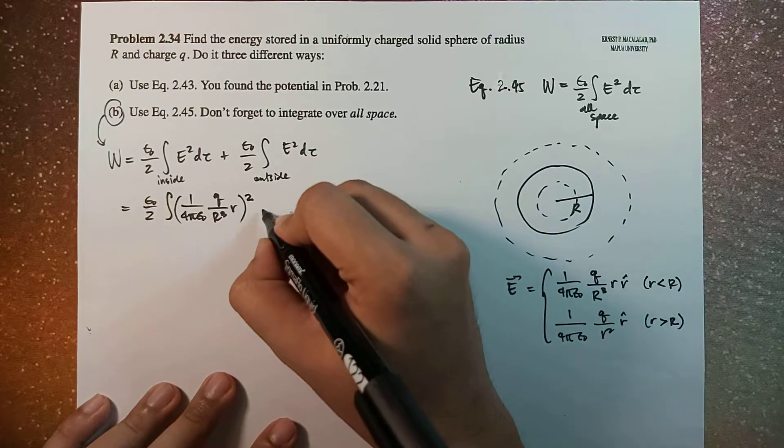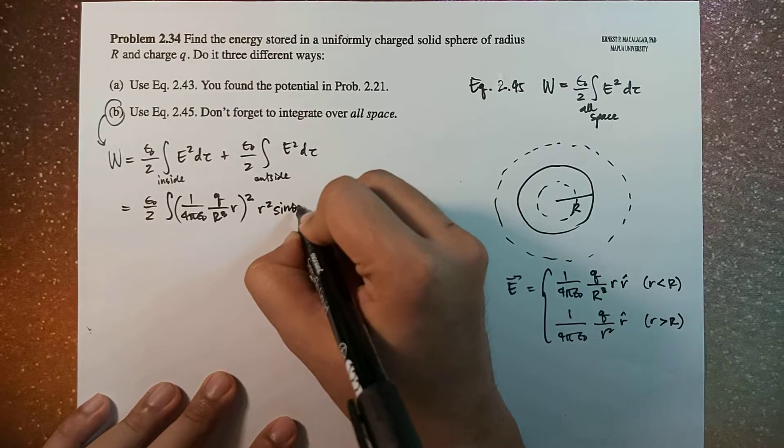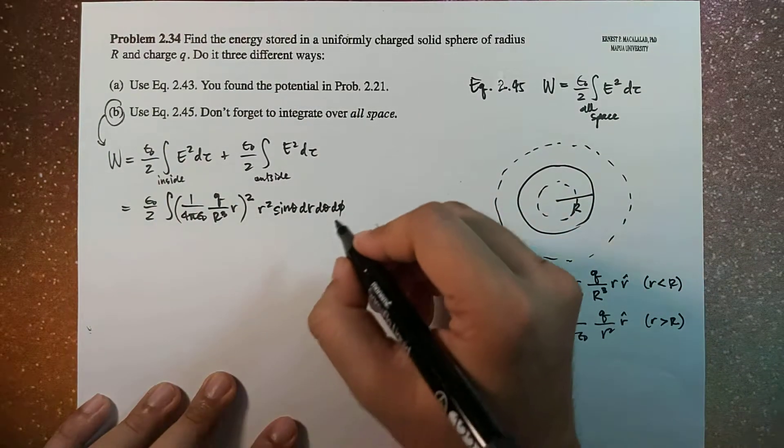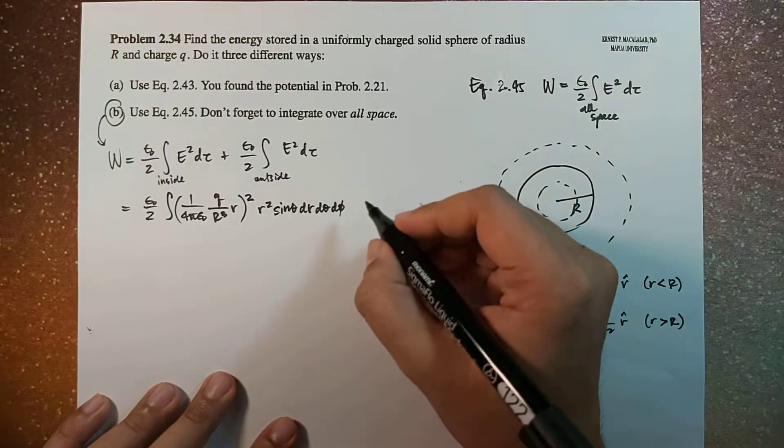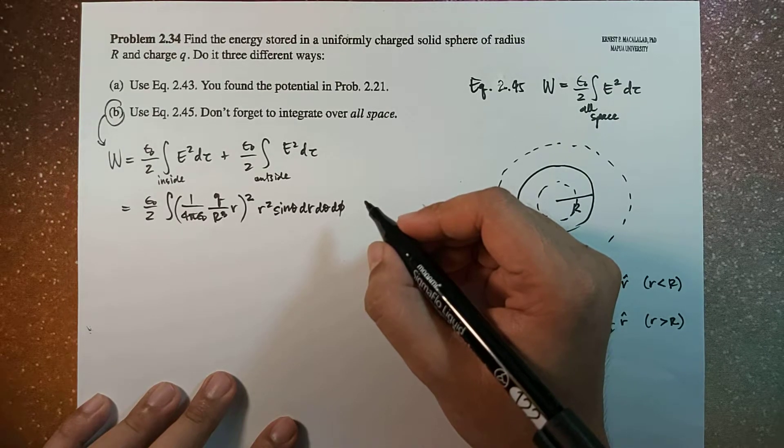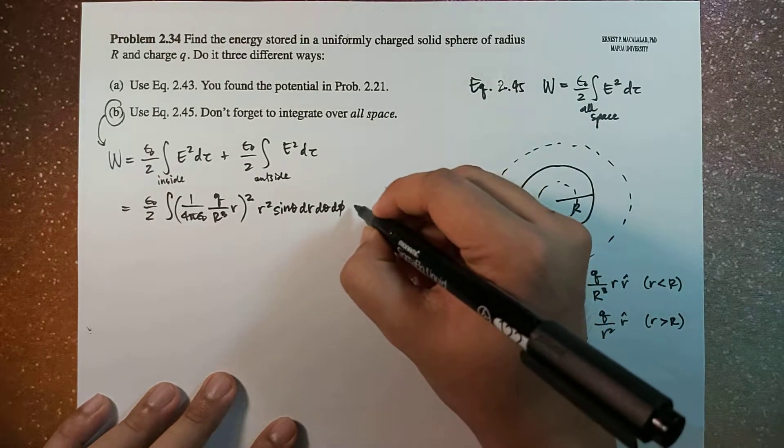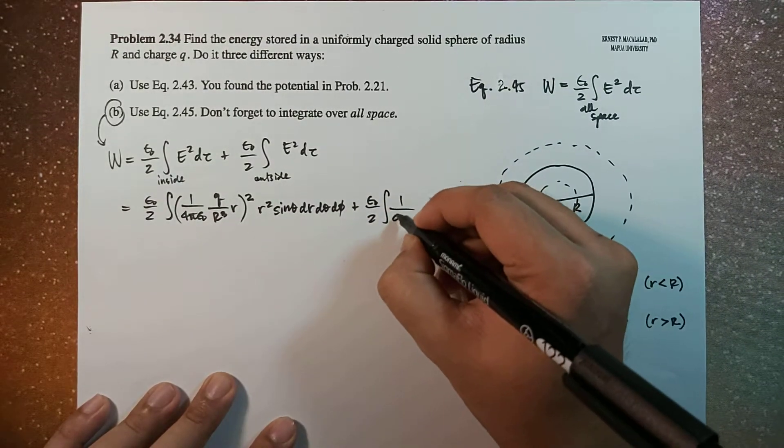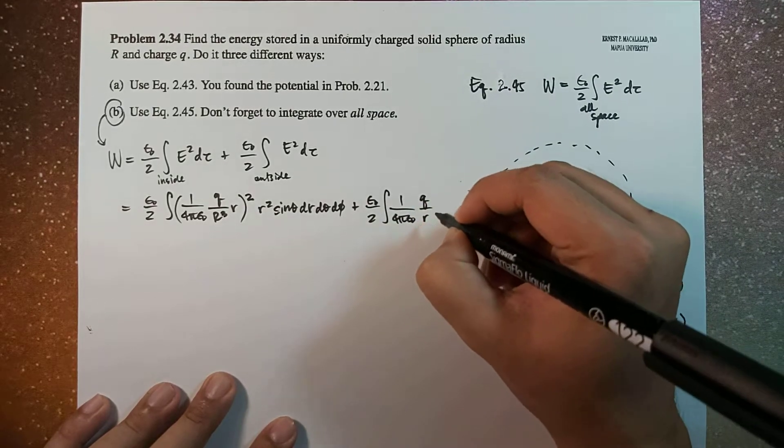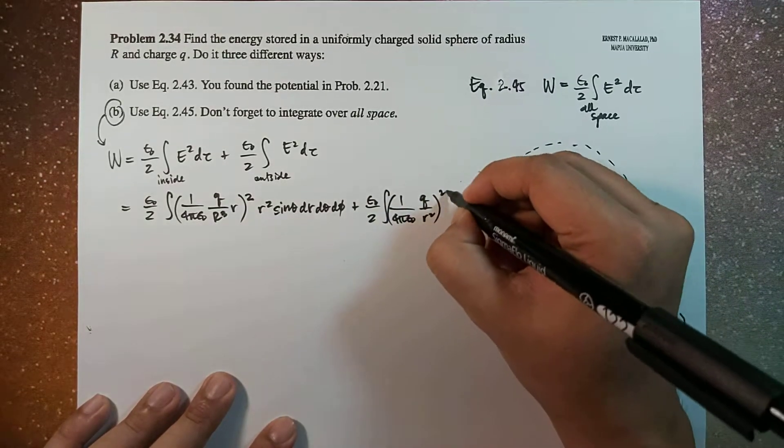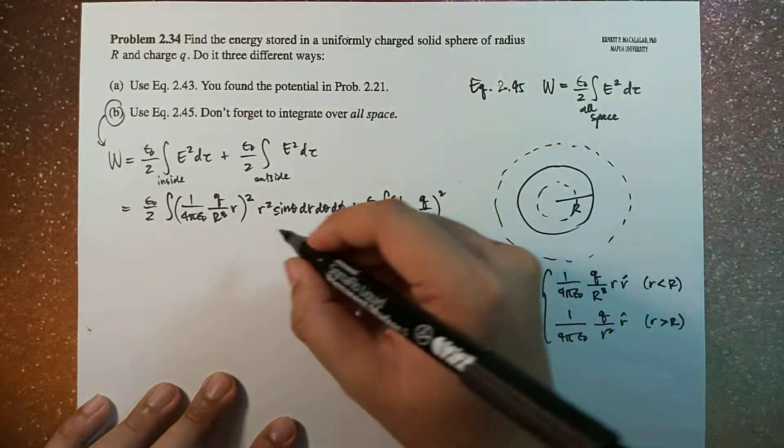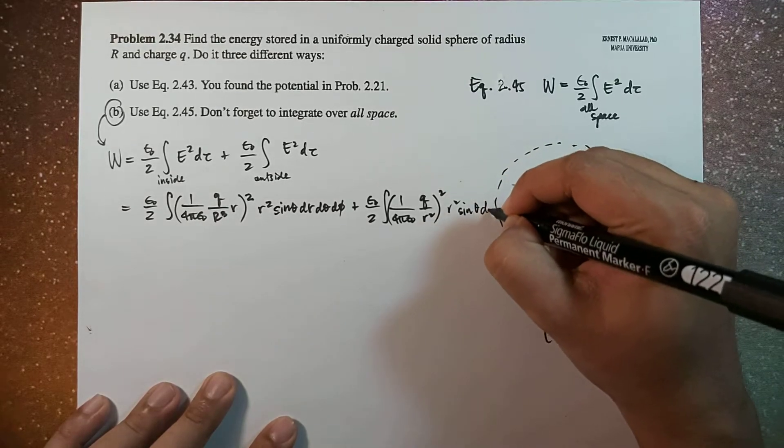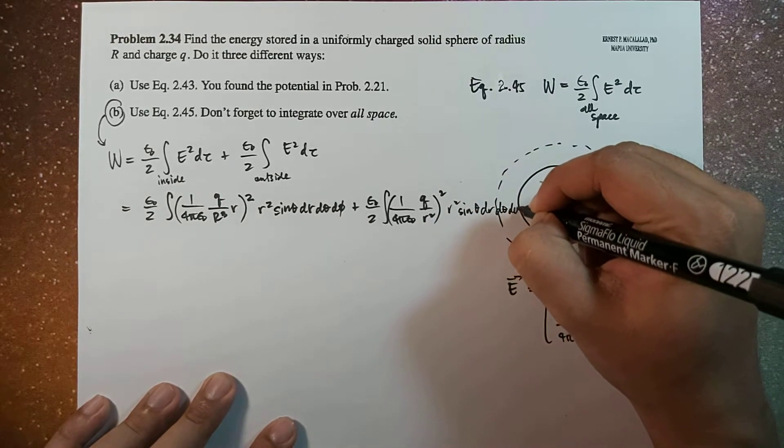So this is now equal to epsilon naught over 2 integral of 1 over 4 pi epsilon naught Q over R cubed r squared, R squared sin theta dr d theta d phi, and then this is plus epsilon naught over 2 times integral of 1 over 4 pi epsilon naught Q over r squared squared. This is r squared sin theta dr d theta d phi.